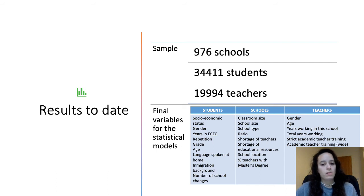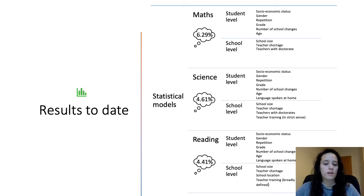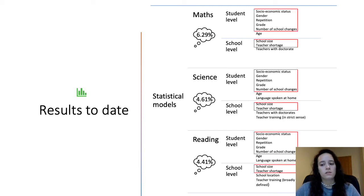After this, we imputed the missing values for schools and teachers variables, and in this table we can see the final variables for developing the statistical models. Each model explains a certain percentage of the difference in performance at the school level, and many variables are common to all the models — five at the student level and two at the school level.